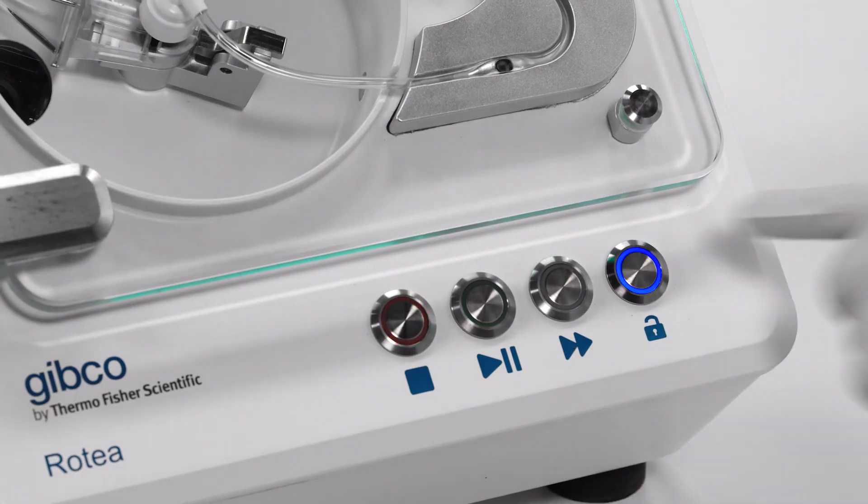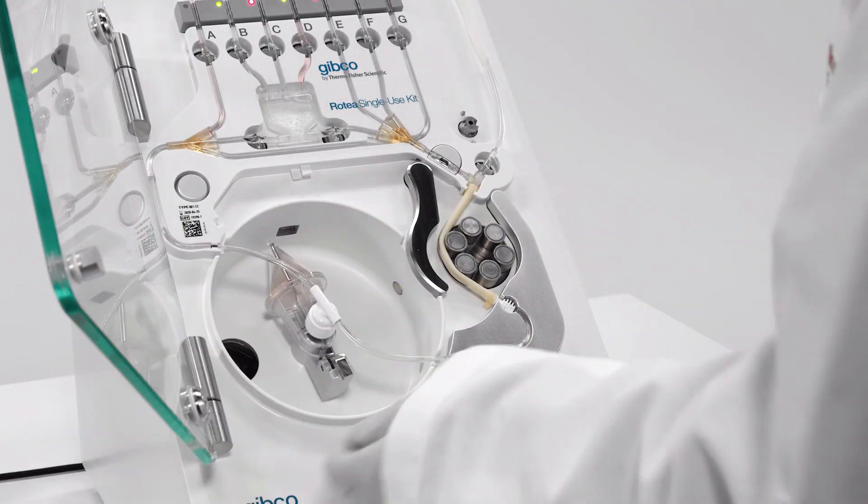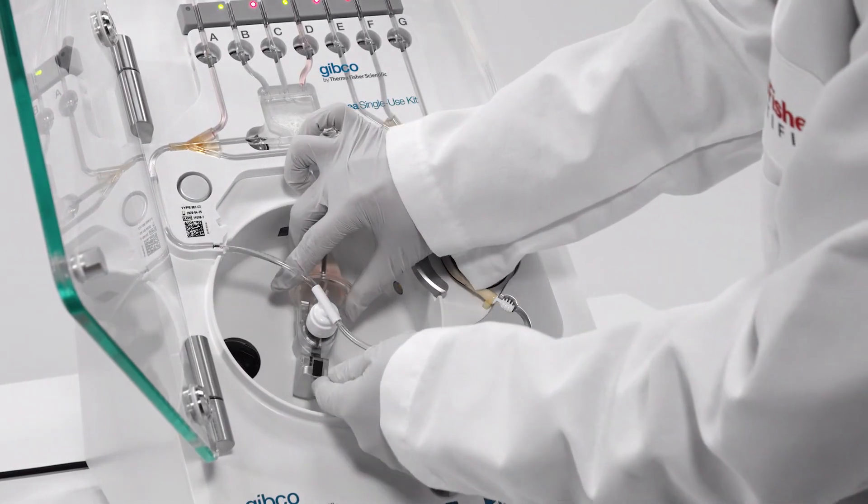Hit the unlock button on the instrument and open the door to access the cone. Then, detach the cone again using the lever.